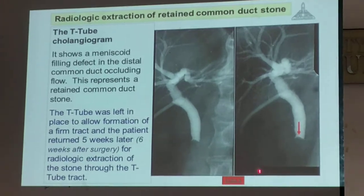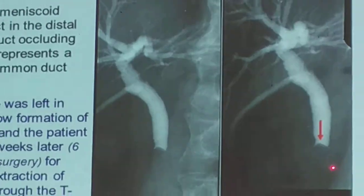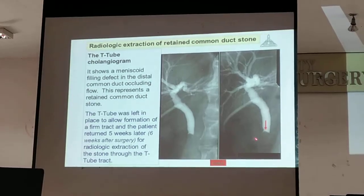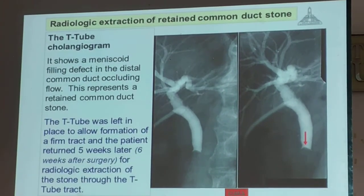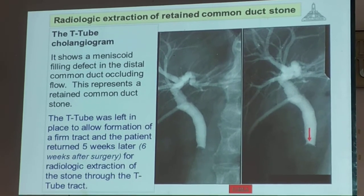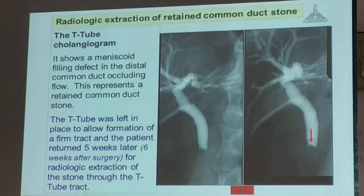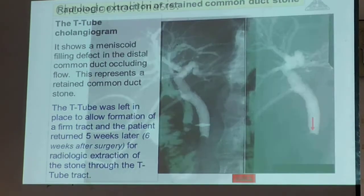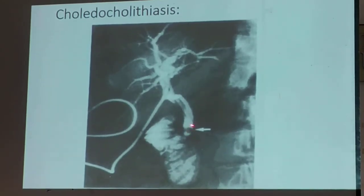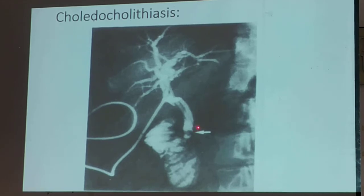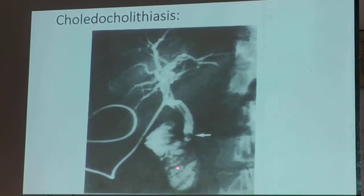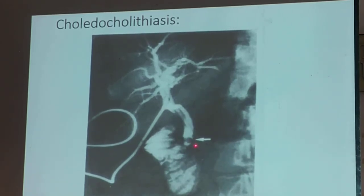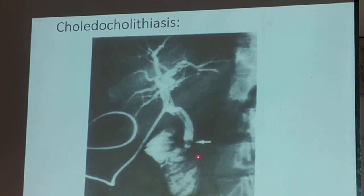You cannot establish that this is purely a stone — this could also be a mass at the distal end of your CBD. Sometimes you can find cholangiocarcinoma here — a mass at the CBD. There you are: the filling defect. Before the contrast reaches the duodenum, there is a filling defect — so that is a CBD stone at the distal end of the common bile duct.